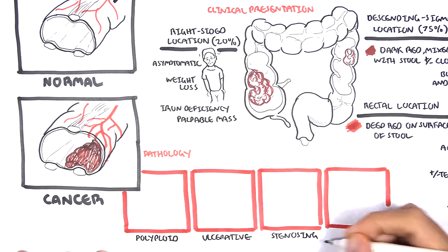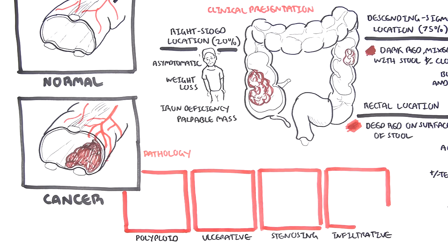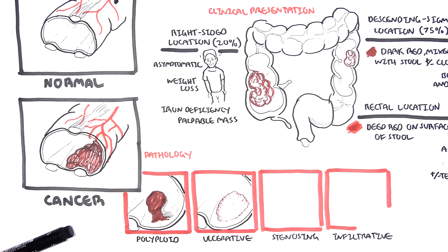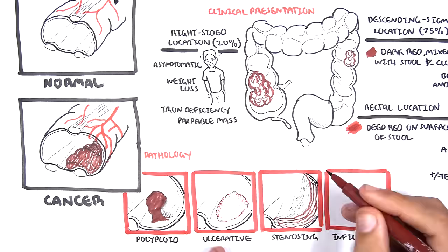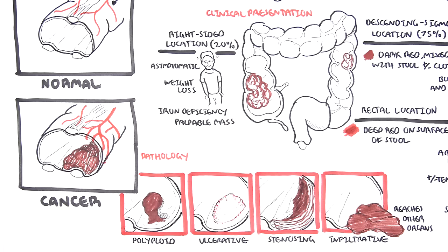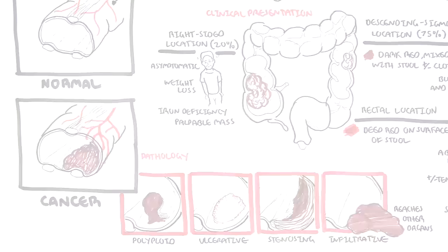Pathology. Colon cancer can come in a few pathological forms. Polyploid, ulcerative, stenosing, and infiltrative. At the end of the day, these different pathological types can and will eventually lead to some form of obstruction.